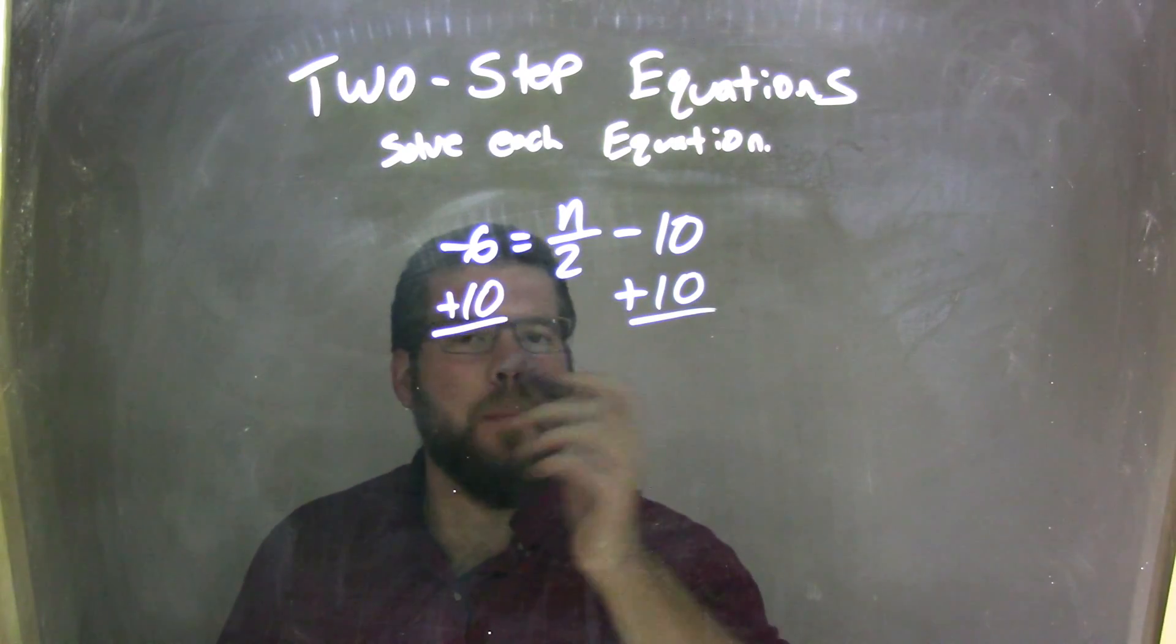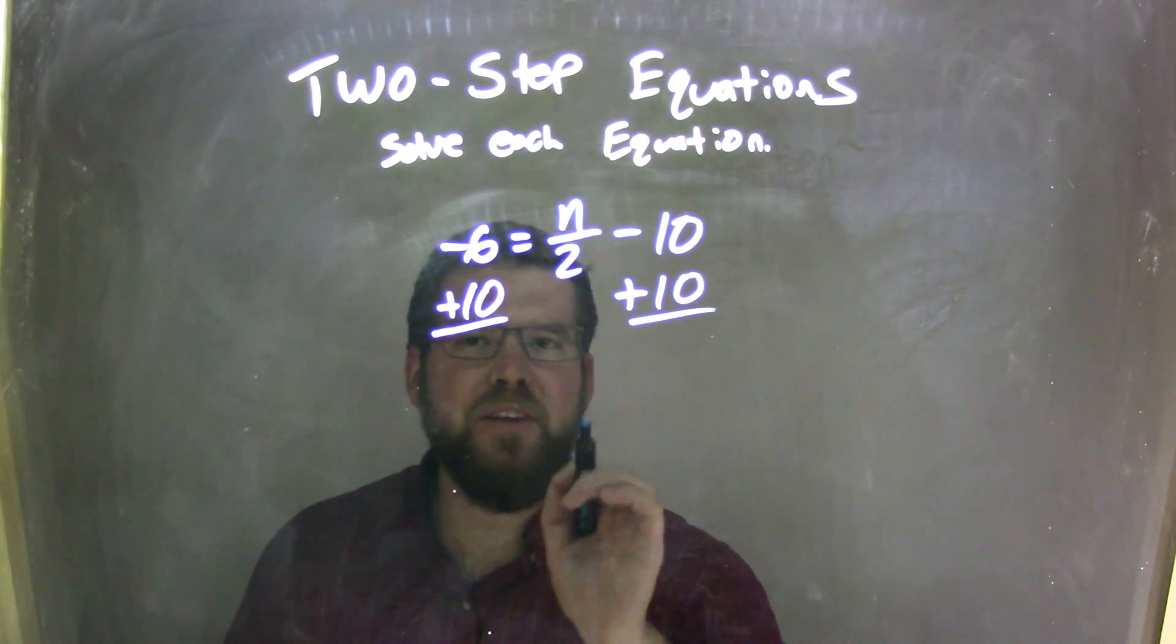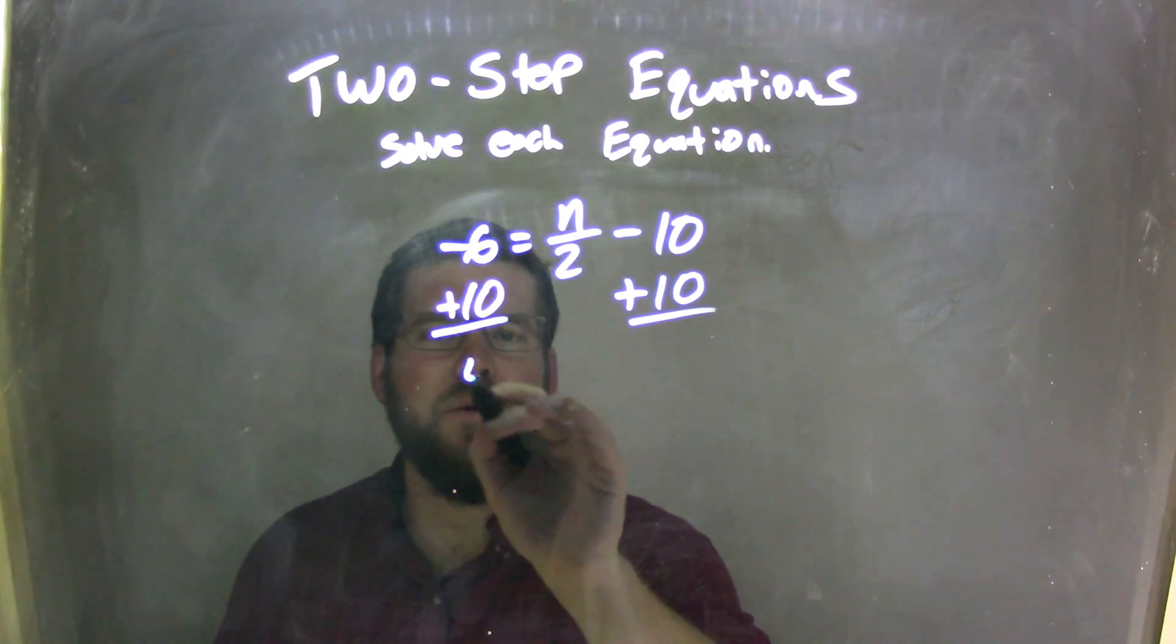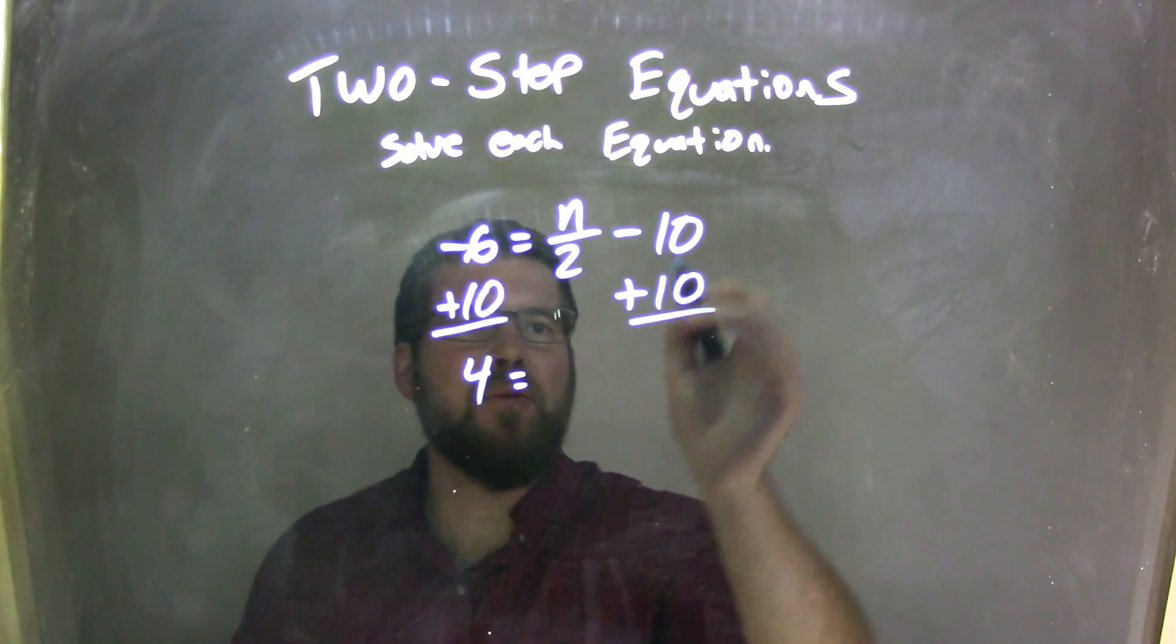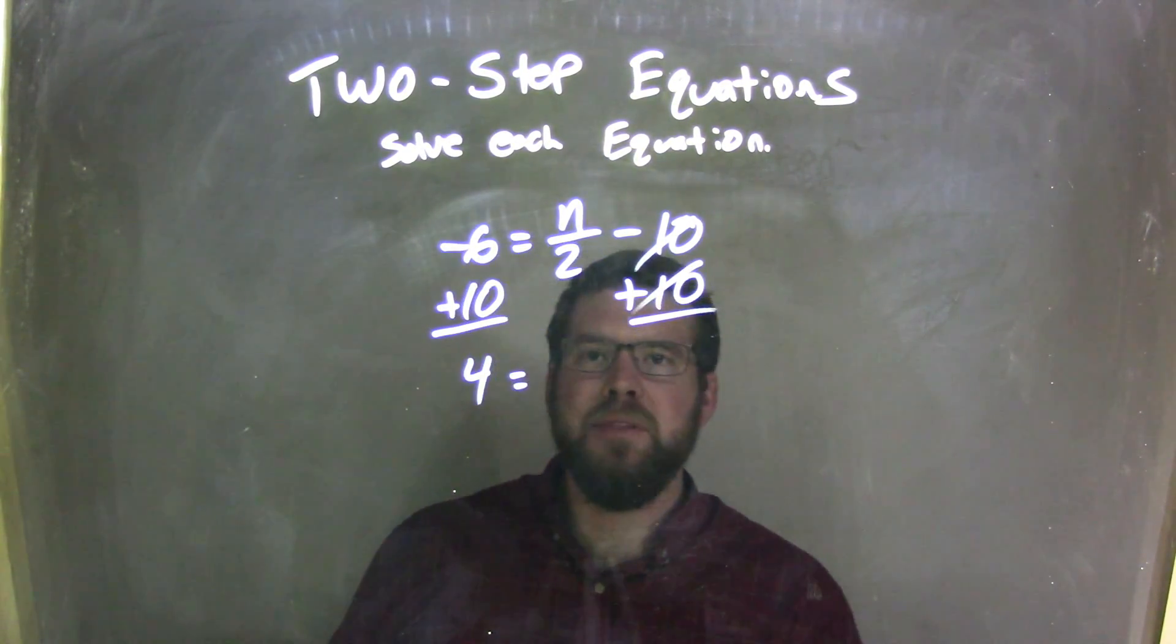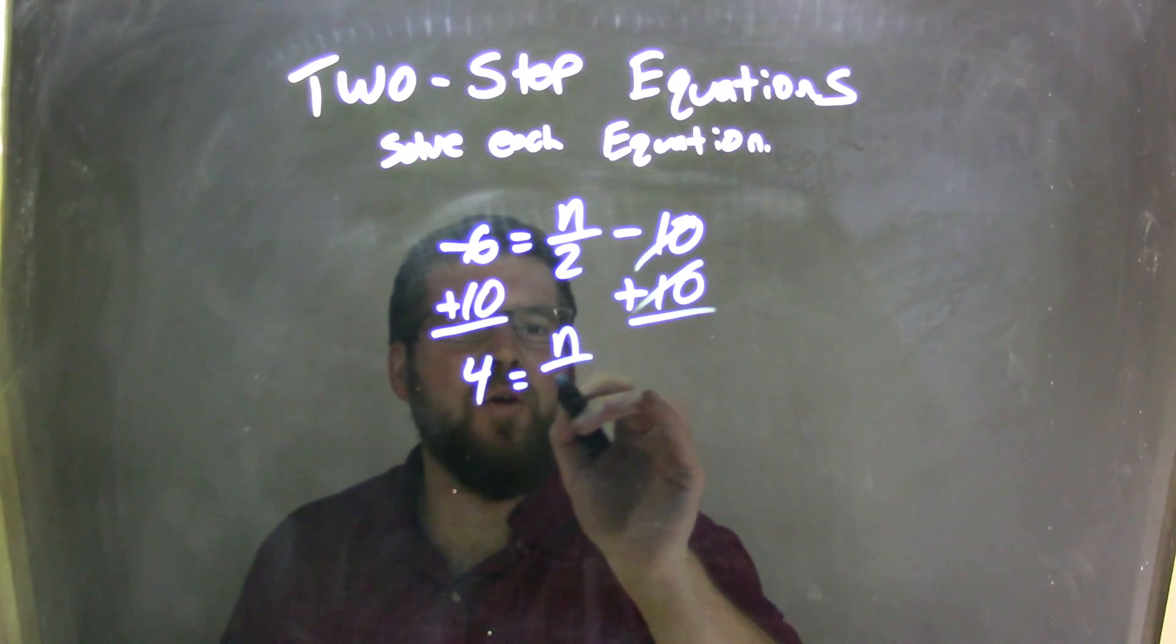Negative 6 plus a positive 10 is a positive 4. So 4 equals, the 10s cancel on the left, and I'm left with 4 equals n over 2.